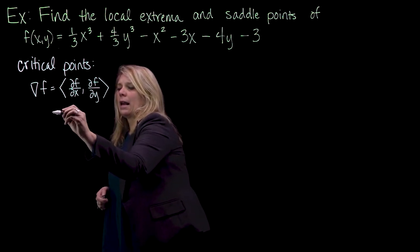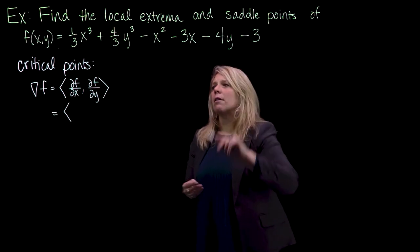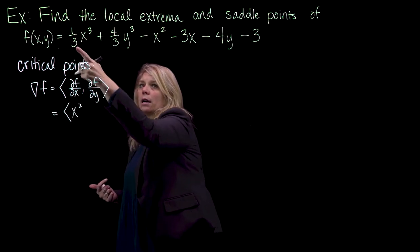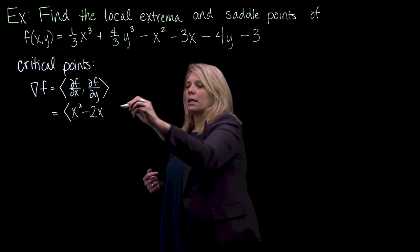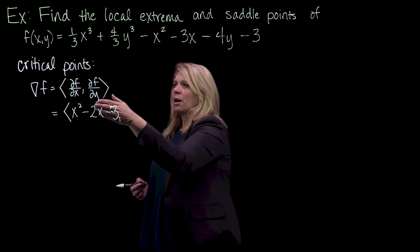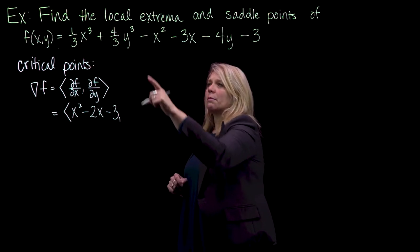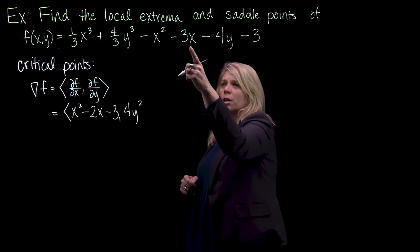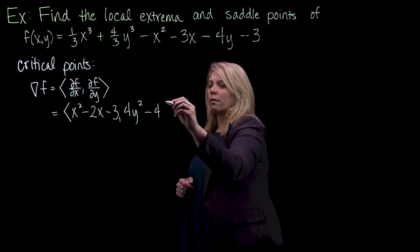So we'll go ahead and write that down. Our partial derivatives are pretty straightforward. We'll get 1/3 times 3, so x squared, then 0, minus 2x, minus 3 for our partial derivative of f with respect to x. For the partial of f with respect to y, the derivative of the first term will be 0. Here we'll have 4/3 times 3, so 4y squared. The derivative of the next two terms with respect to y will be 0, and then minus 4.